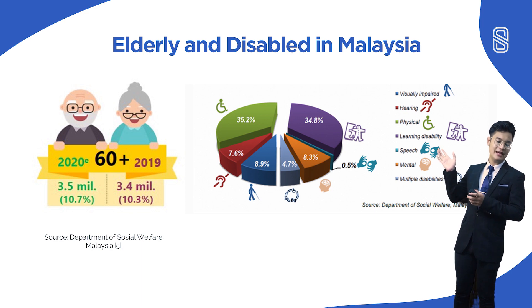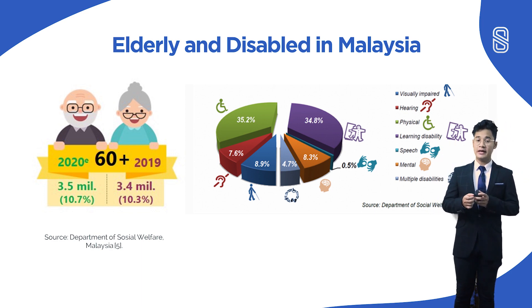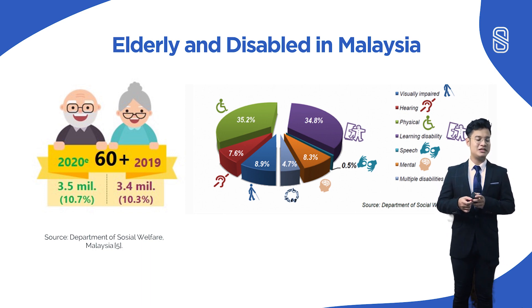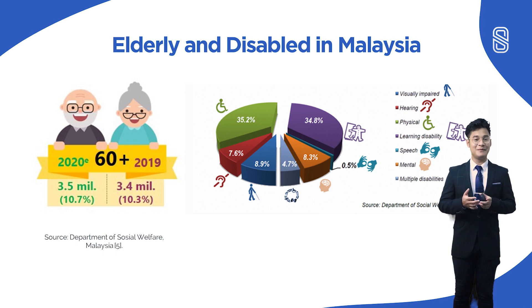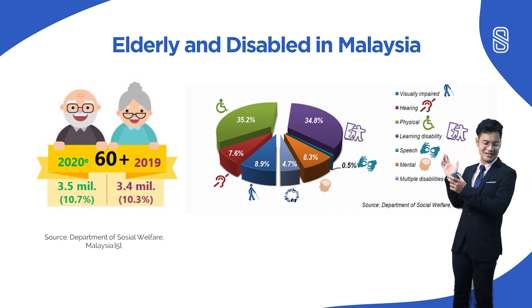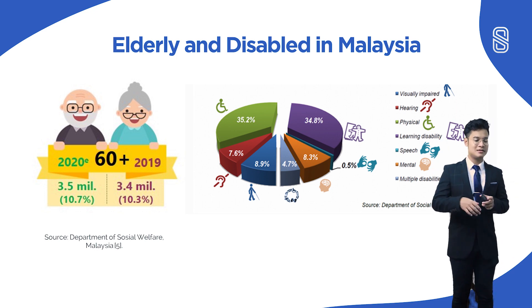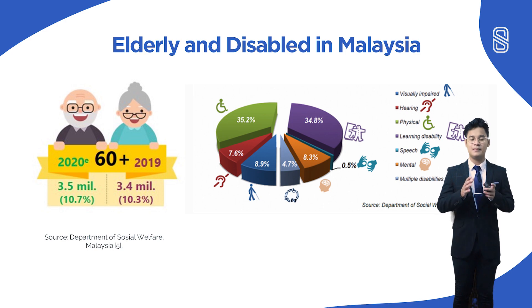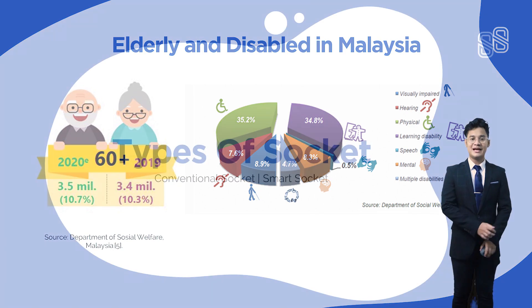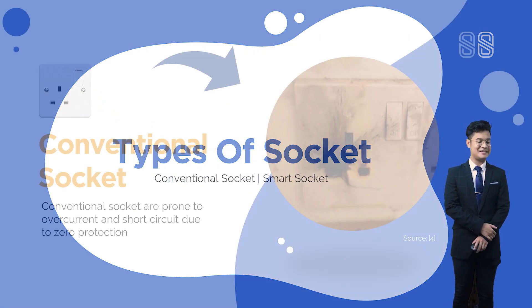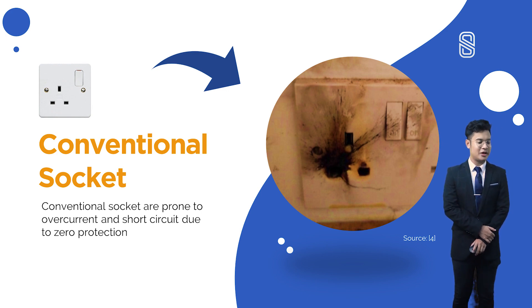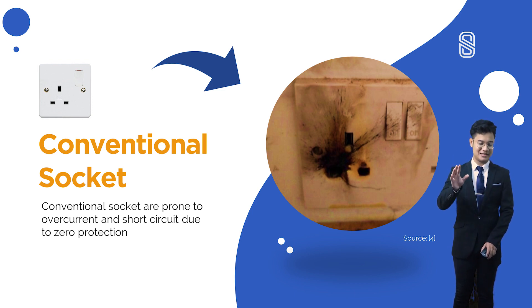Next, looking at the elderly and disabled in Malaysia. As you can see in the picture on the left, in 2019 there were 3.4 million elderly in Malaysia, and it is estimated that by 2020 there will be 3.5 million — an increase of 500,000 elderly. The second picture shows the registered disabled categories in Malaysia in a pie chart. The green segment is the most registered disability, which is physical disability. For elderly and disabled, mobility limitation is the biggest problem we need to solve. Next, the types of sockets — conventional sockets are prone to overcurrent and short circuit due to zero protection. Our appliances have protection, but our sockets don't.